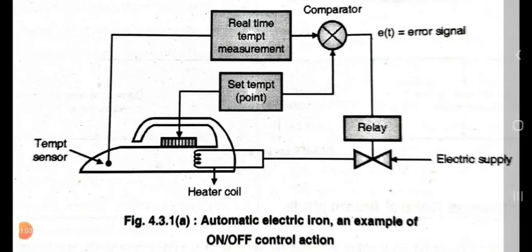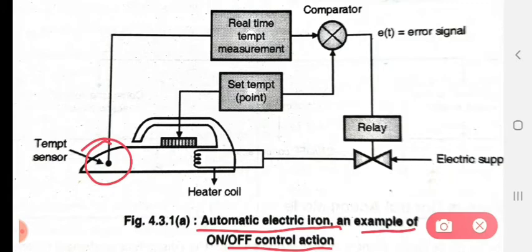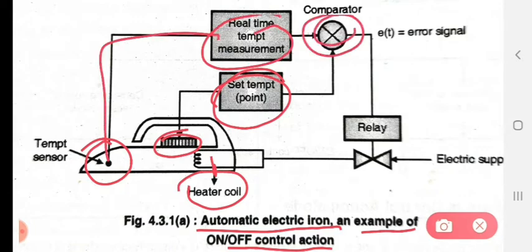This is the diagram for automatic electric iron. It is an example of on-off control action. In this diagram, this is the temperature sensor, this is the heater coil, this one is the set point or set temperature. After that, this is the real temperature measurement, which is connected to the comparator that compares the set point.